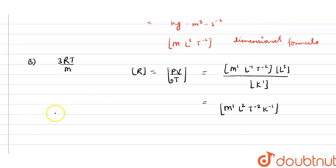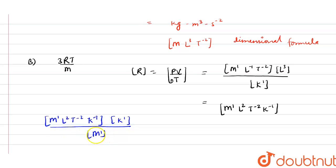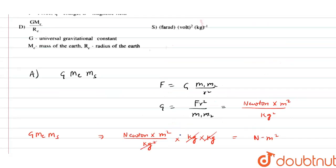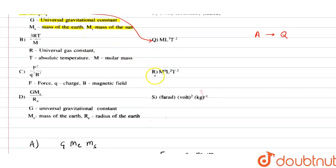Substituting into 3RT/M: R has dimension M¹L²T⁻²K⁻¹, 3 is a constant, T is K¹, and M is M¹. The M and K terms cancel, giving L²T⁻². So option B matches with option R.